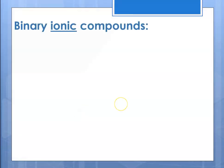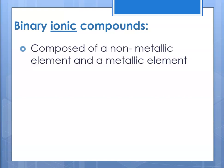For starters, we will talk about binary ionic compounds. Binary compounds only have two elements present. We've already learned about naming binary molecular compounds, so now we're talking about binary ionic compounds.